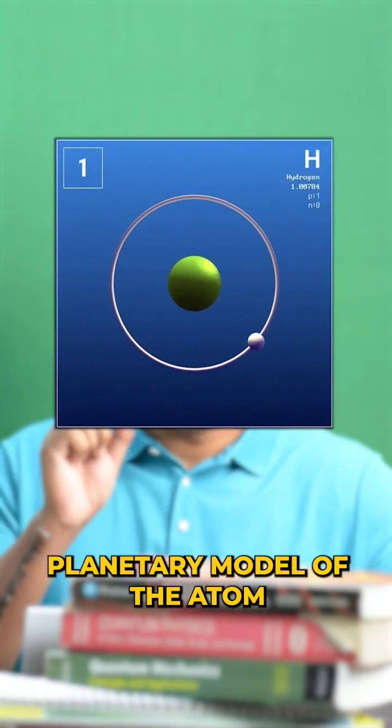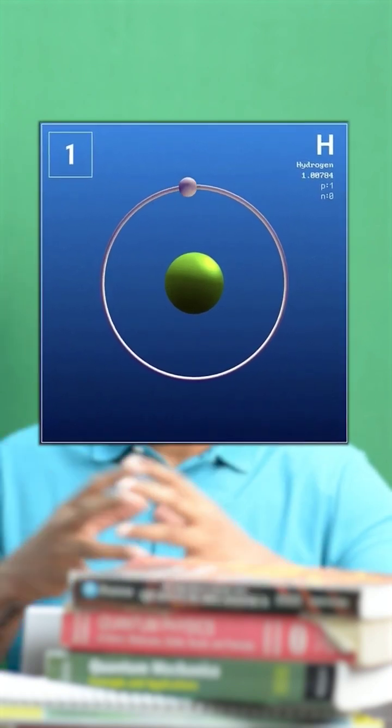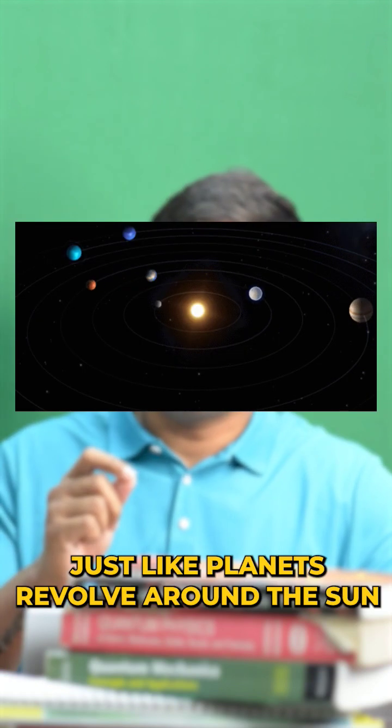Based on this, he gave the planetary model of the atom where almost all the mass of the atom is concentrated in the center and the electron revolves around it, just like the planets revolve around the sun.